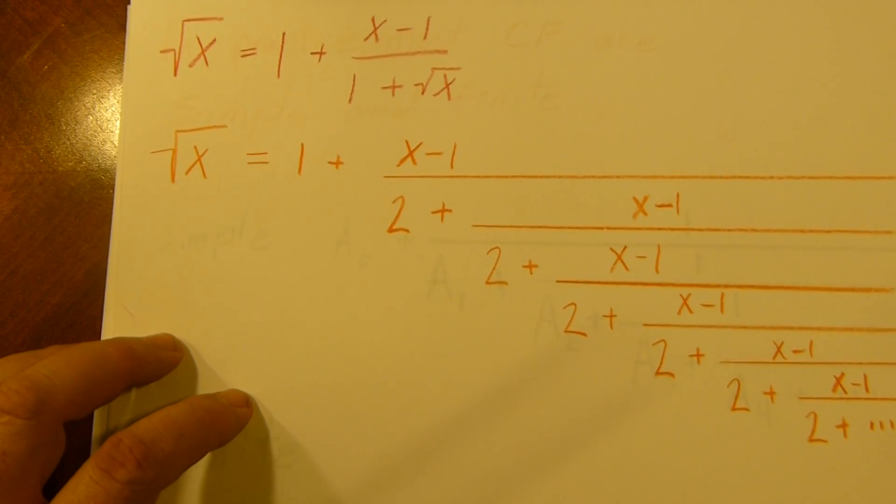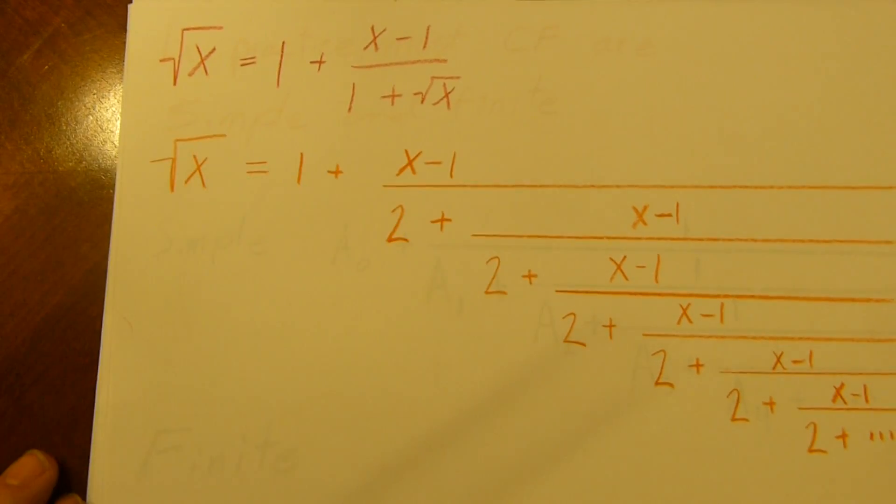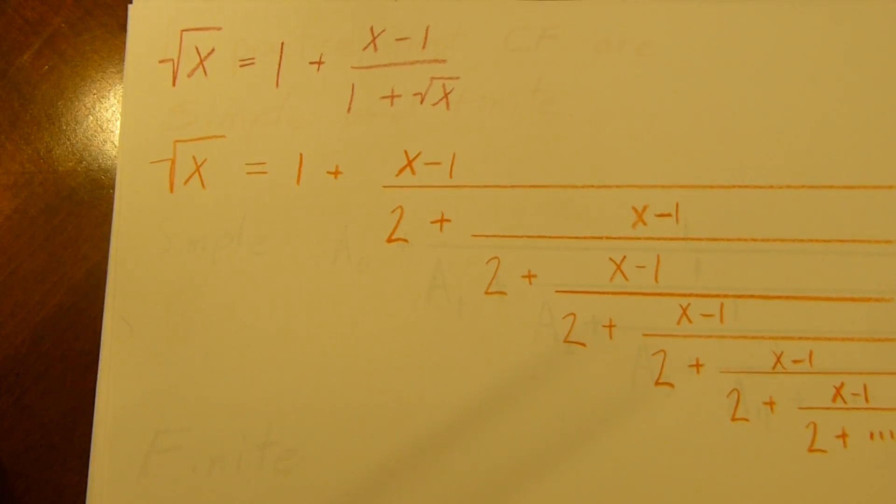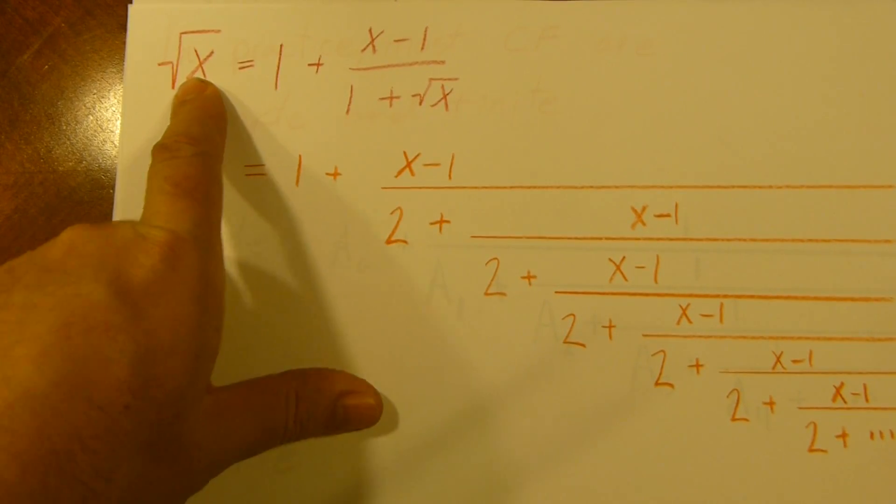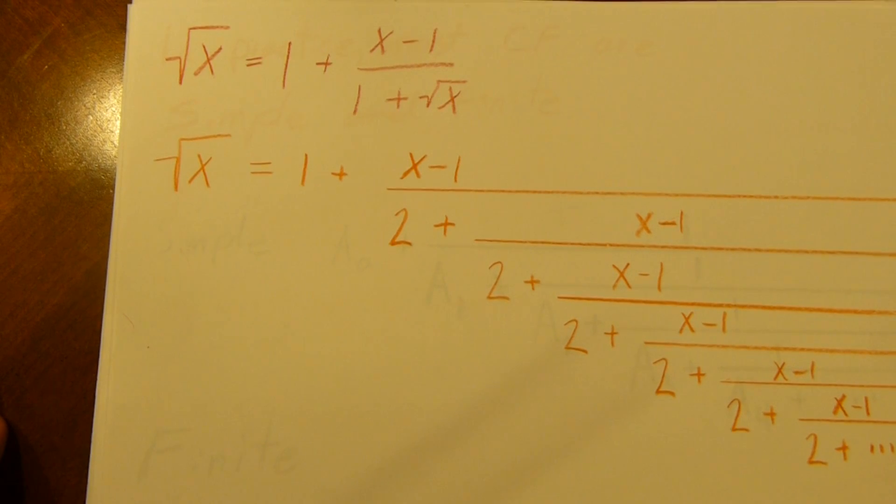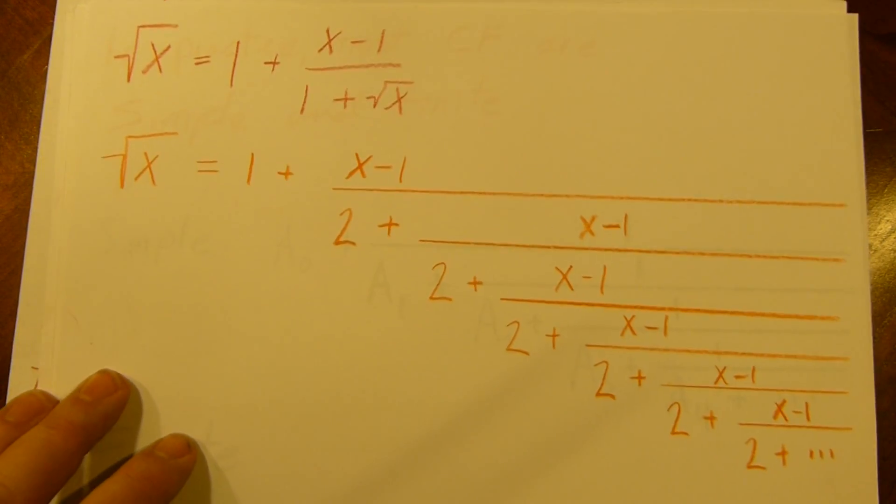Now one of the practical uses, let's take a look at this. And you guys can double check this and it works out just fine. So if we start with the square root of x equals 1 plus (x-1) over 1 plus square root of x, then we can say, well, what's the square root of x? We plug it in there and we nest it over and over infinitely. So we get something like this. Well, this is what we get, in fact.